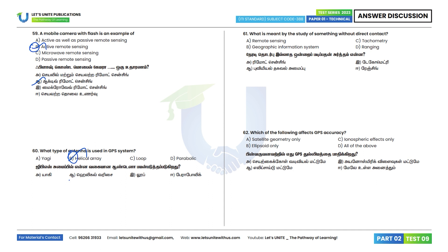Question 61: What is meant by the study of something without direct contact? The answer is remote sensing. Option A is the correct answer. Question 62: Which of the following affects GPS accuracy? Satellite geometry, ellipsoid, ionosphere all affect GPS accuracy — all of the above is the correct answer. Option B.